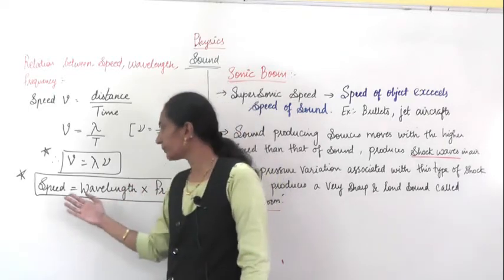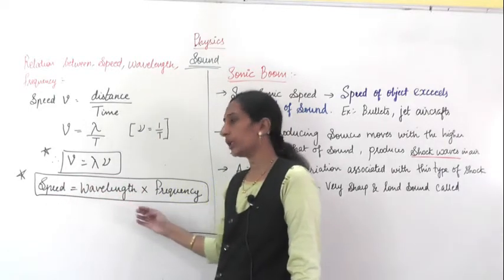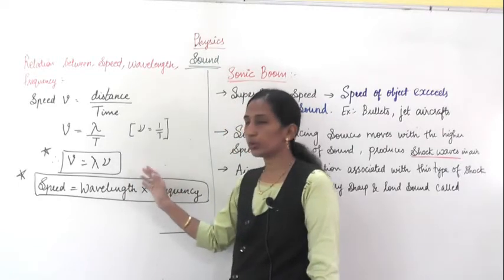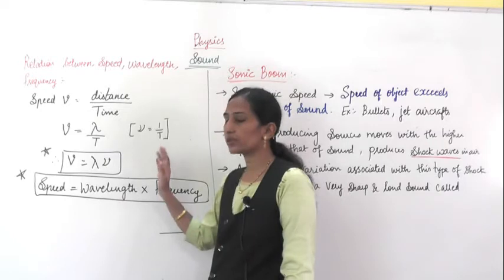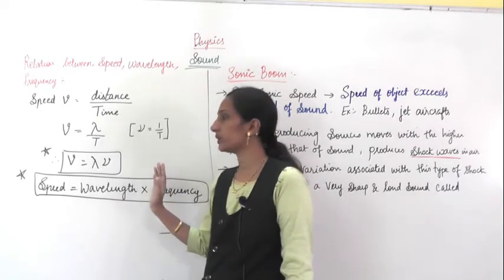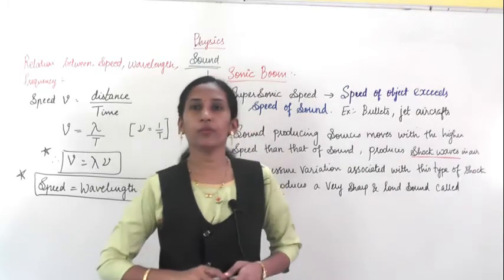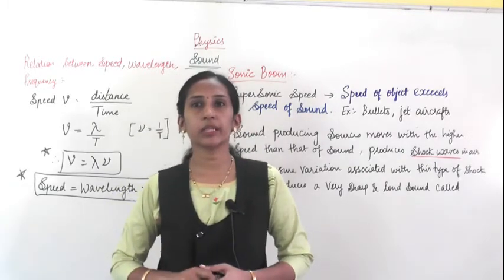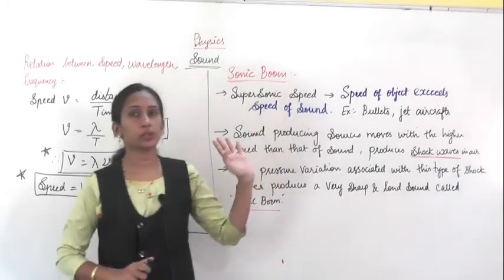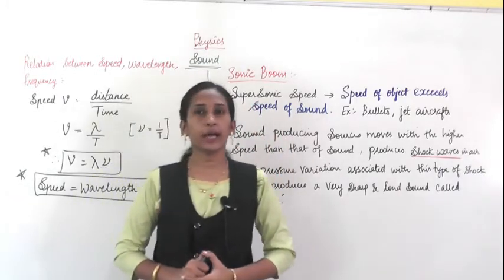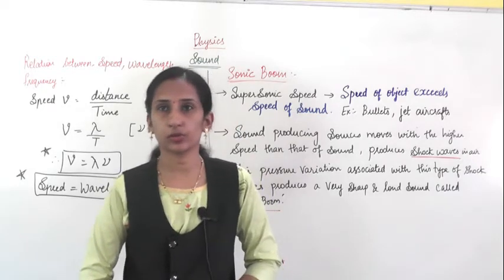What is the relation? It is v — meaning speed — equals lambda, the wavelength, multiplied by frequency nu. This is the relation between speed, wavelength and frequency, and this is very important for the numericals. You should know this relation. Now, after this relation, you are going to study about the sonic boom. What is called the sonic boom? This term is related to sound and it is very interesting.